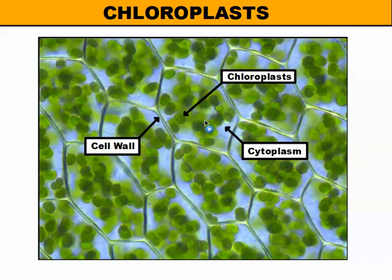Chloroplasts are filled with a green pigment called chlorophyll, and it's this pigment that allows photosynthesis to occur. So let's take a look at the structure of a chloroplast — it's not just a bag filled with green pigment.